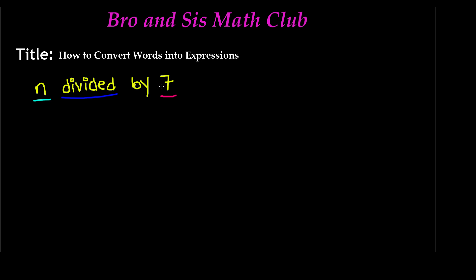Now that we have underlined all our key terms, it's easier because we already know that we're dividing, our variable is n, and our number is 7. To write this as an expression, some people write n with the division sign and then 7. But the most preferable representation is fraction form — you write it as n over 7, because it means the same thing: n divided by 7.